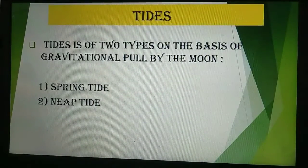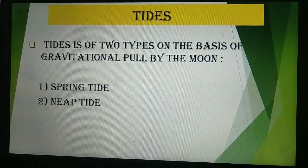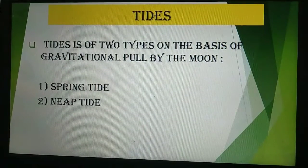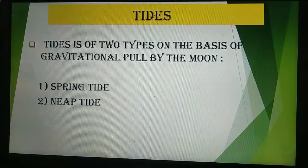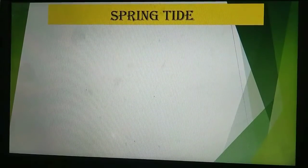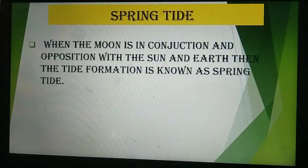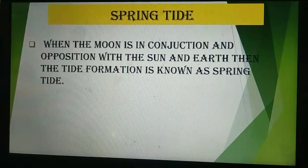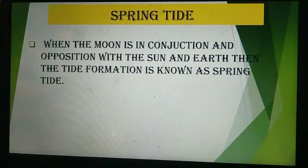On the basis of gravitational pull by the moon, tides are divided into two parts: spring tide and neap tide. Let us check with the help of the diagram how these tides are formed. First is spring tide. When the moon is in conjunction and opposition with the sun and earth, then the tide formation is known as spring tide.